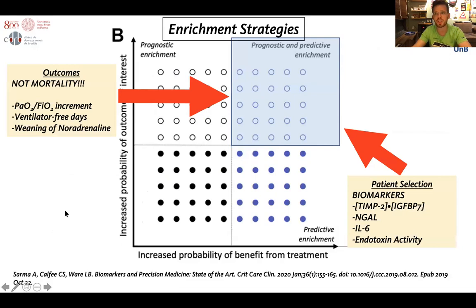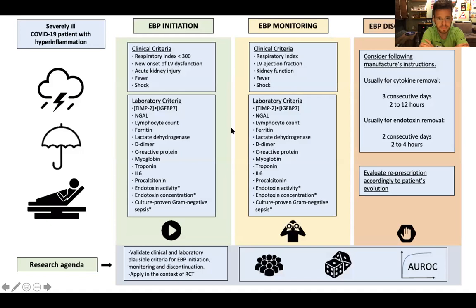We need to apply enrichment strategies to select the right patients. So if we select based on biomarkers like IL-6 or biomarkers of AKI, and select the correct outcomes expected and plausible to be changed in the ICU, then we might have better results. We came up with this figure representing the criteria for initiation of extracorporeal blood purification, divided into clinical and laboratory criteria.